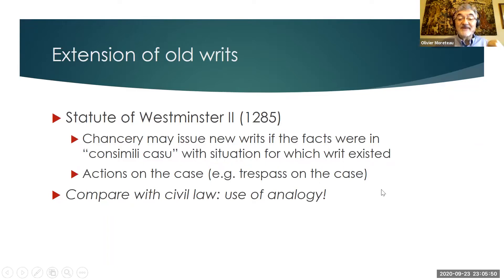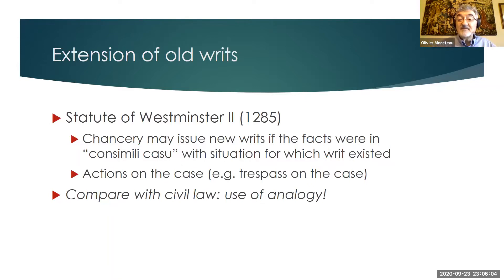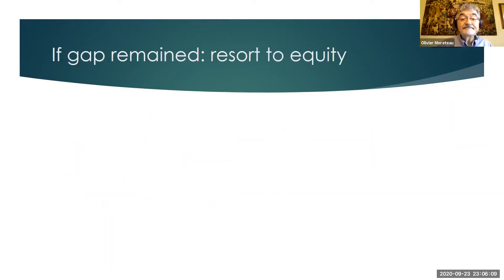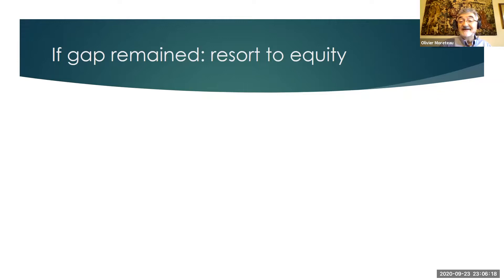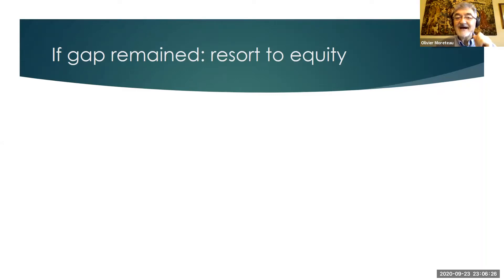A famous example was stretching the scope of the writ of trespass so that it would reach not only situations where parties had acted directly or forcibly, but also situations involving simple negligence. And if the gap remained — if no new writ and no action on the case was allowed — you have resort to equity, this time in the English context.